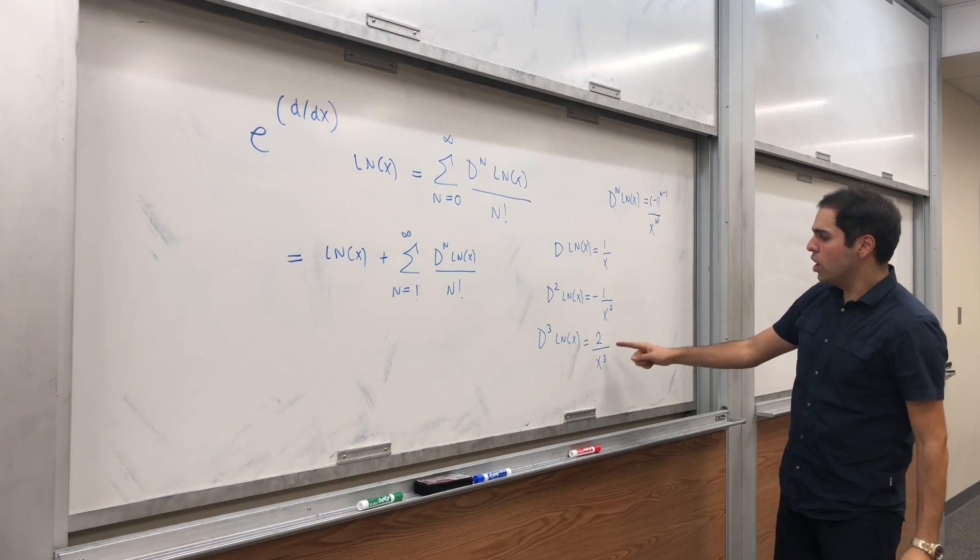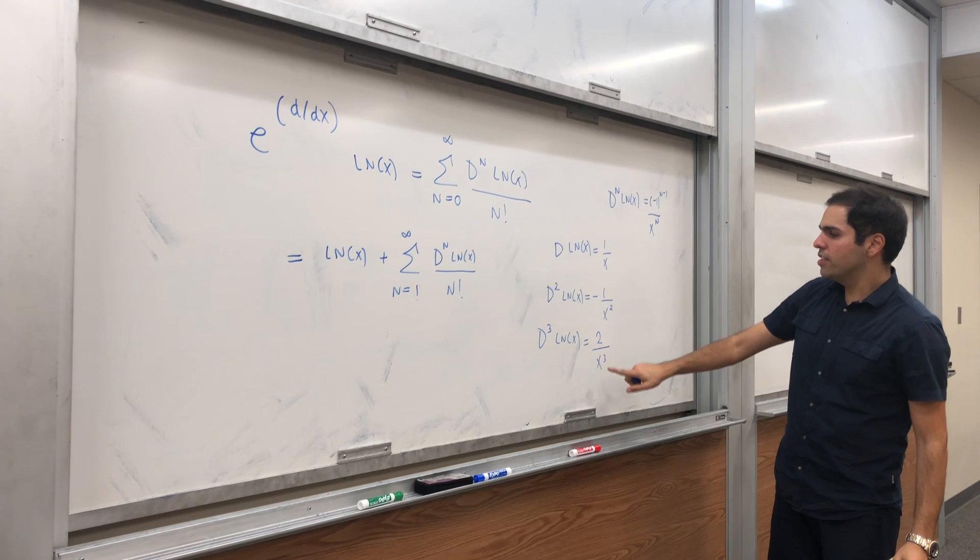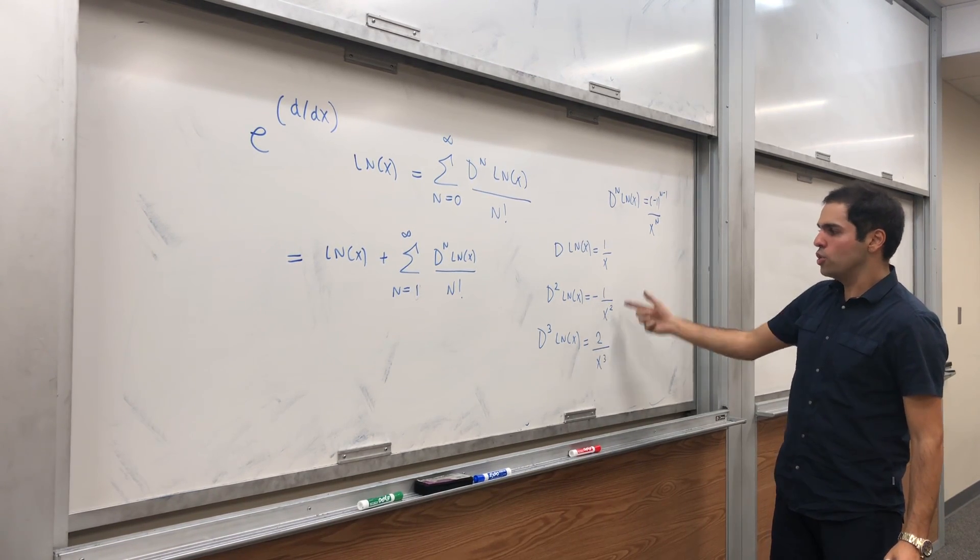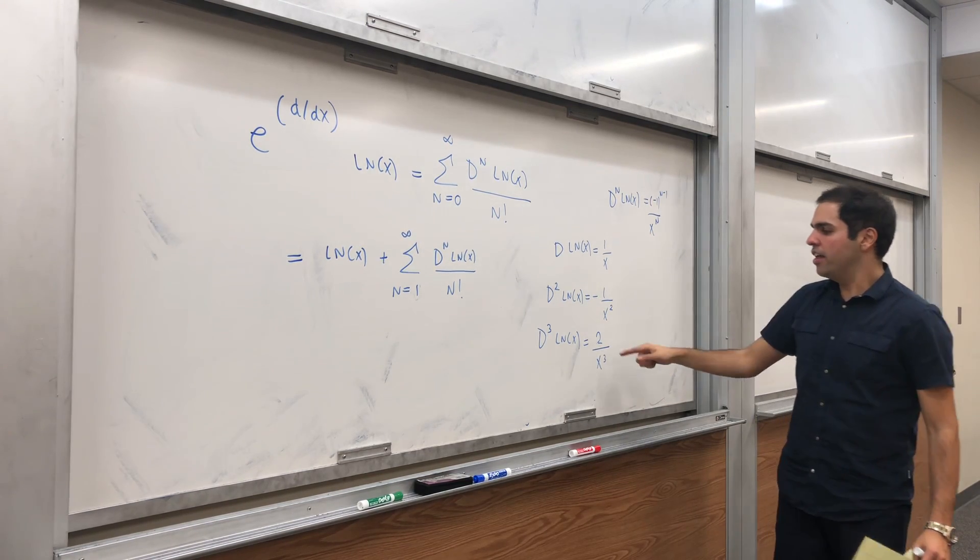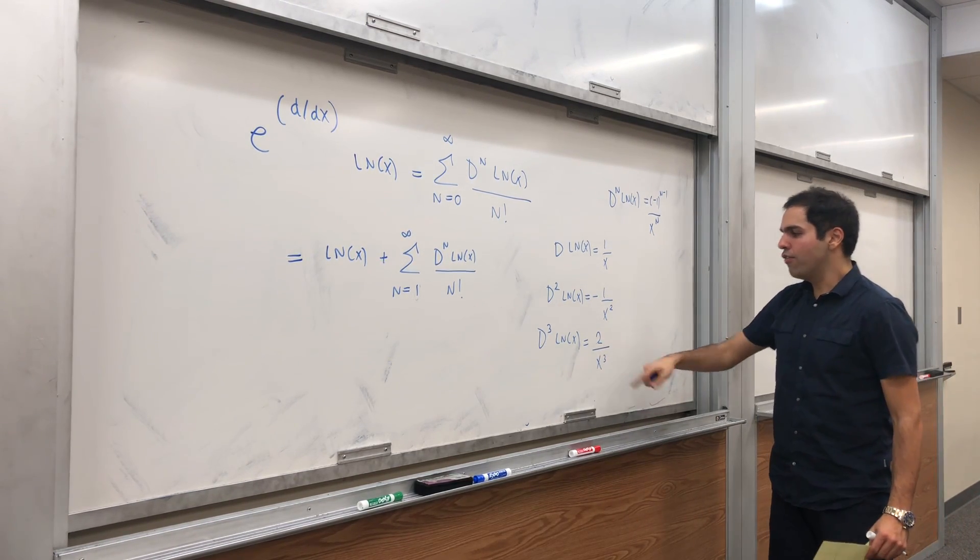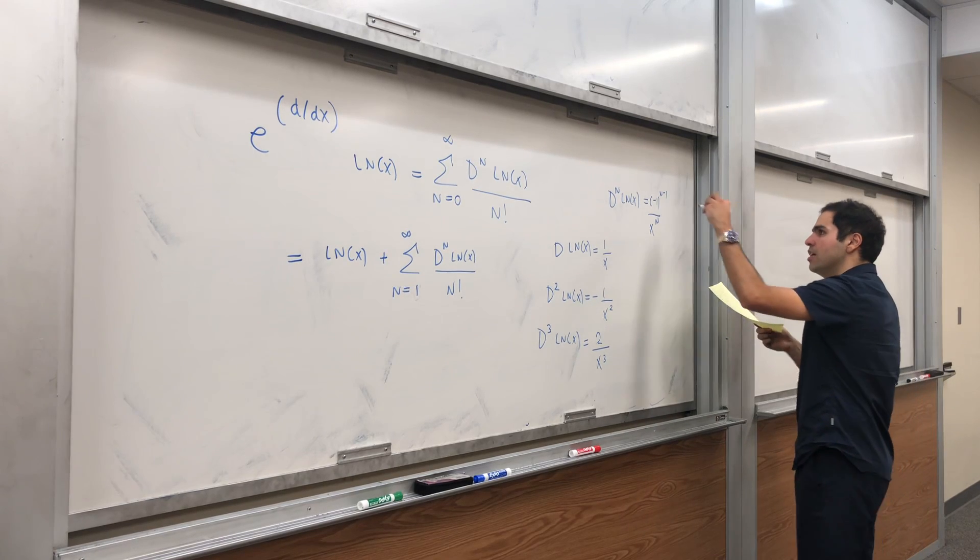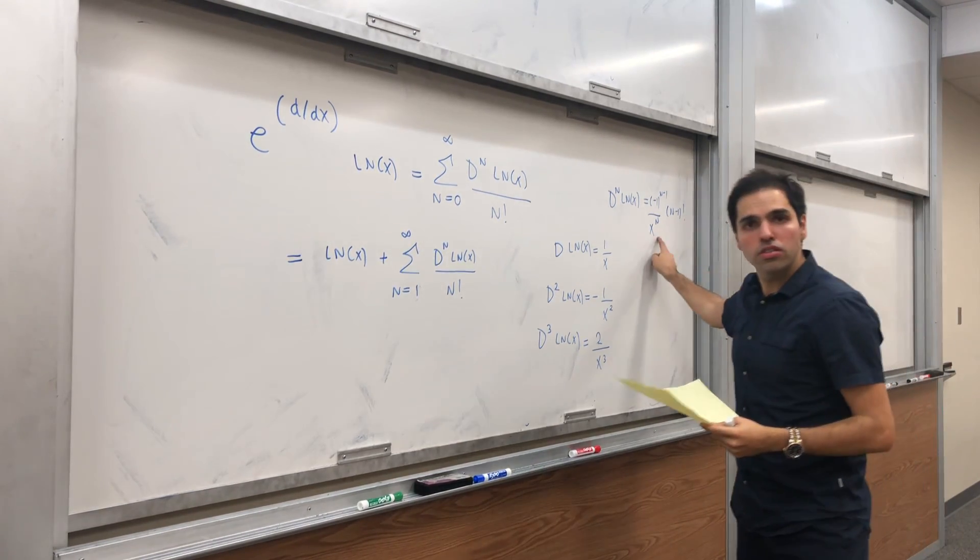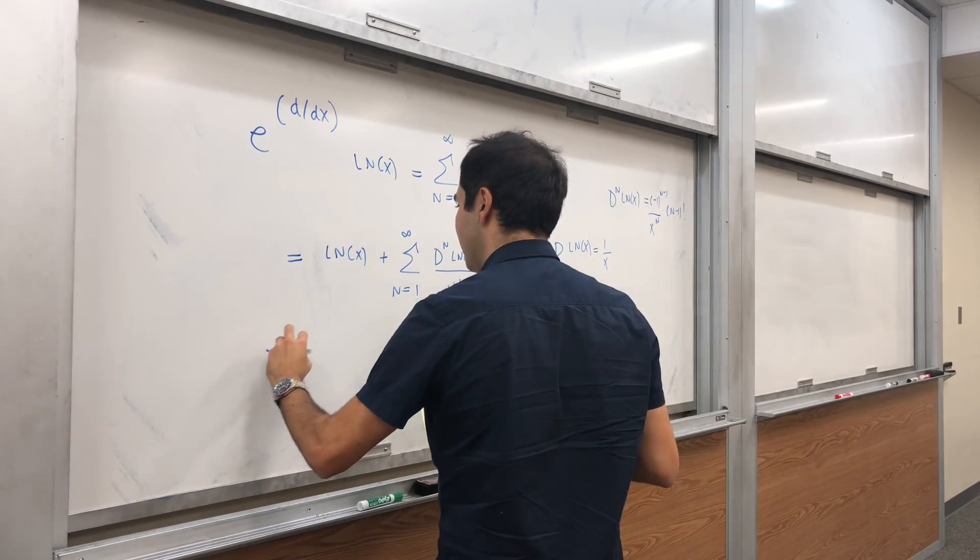And lastly, notice 2 is really (3 - 1) factorial, 1 is (2 - 1) factorial. And if you continue, you get 4 minus 1 factorial. So really (n - 1) factorial. So this is an explicit expression for d^n ln(x).